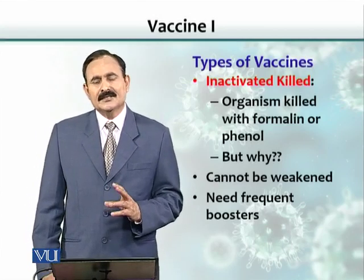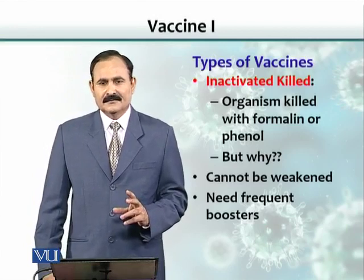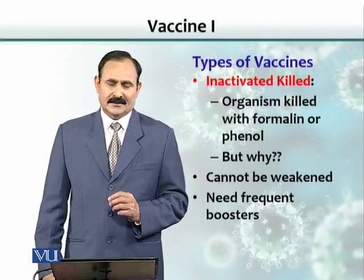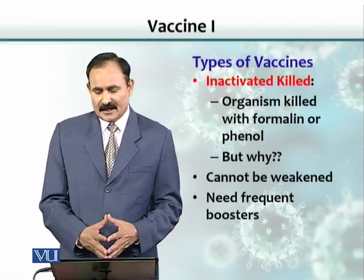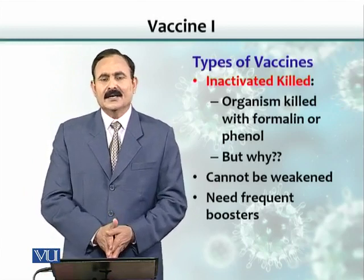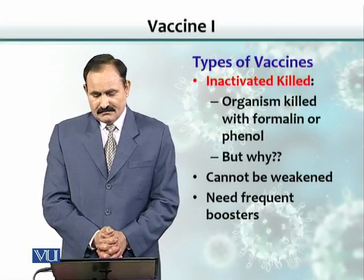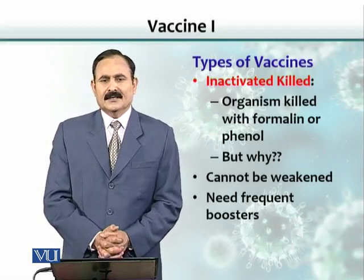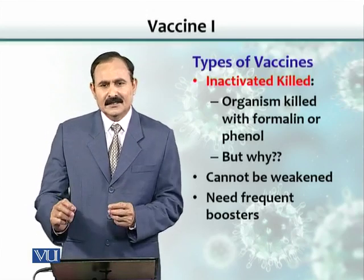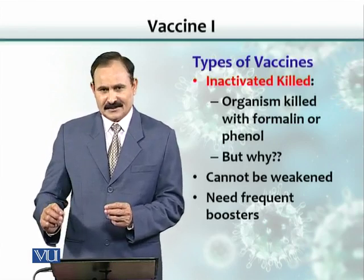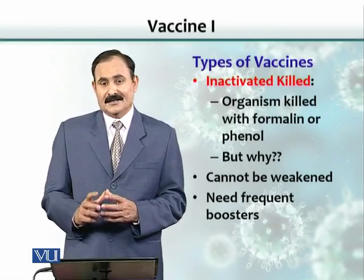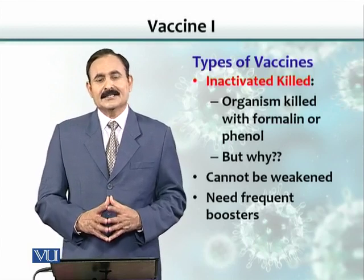Inactivated vaccines are used when we have no choice but to kill the organism. We treat the organism with a chemical like phenol or formalin to kill it — a process called inactivation. The disadvantage is that the antigen dose does not replicate like a live virus, so more doses and more frequent boosters are needed with killed vaccines.